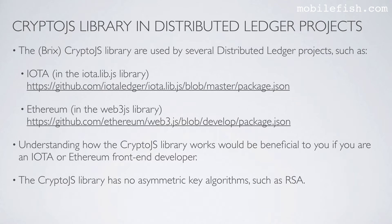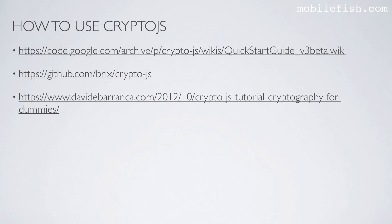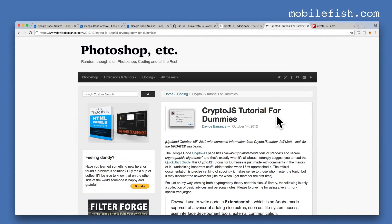The Crypto.js library has no asymmetric key algorithms such as RSA. Here are three links where you can find more information on how to use the Crypto.js functions. If you have never used Crypto.js before, I highly recommend that you read this article.